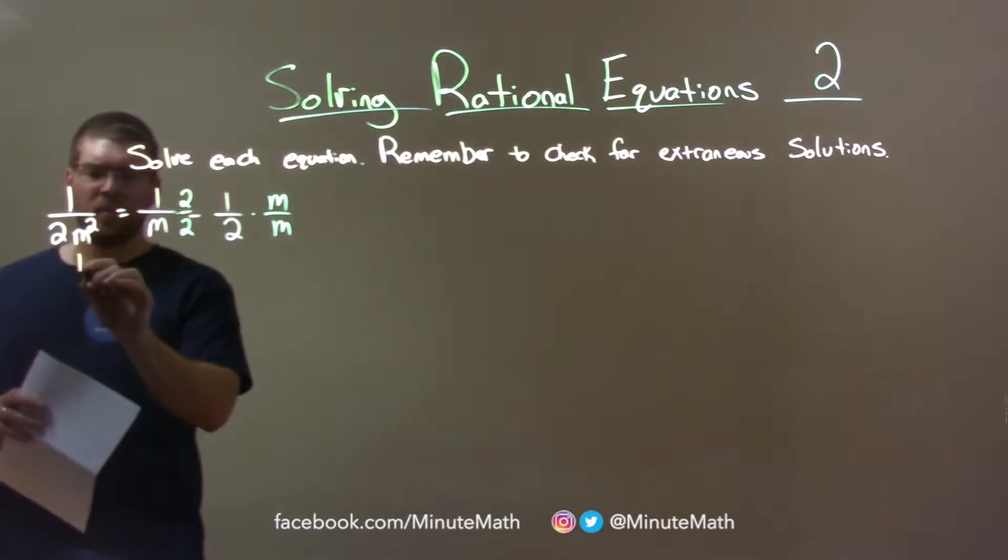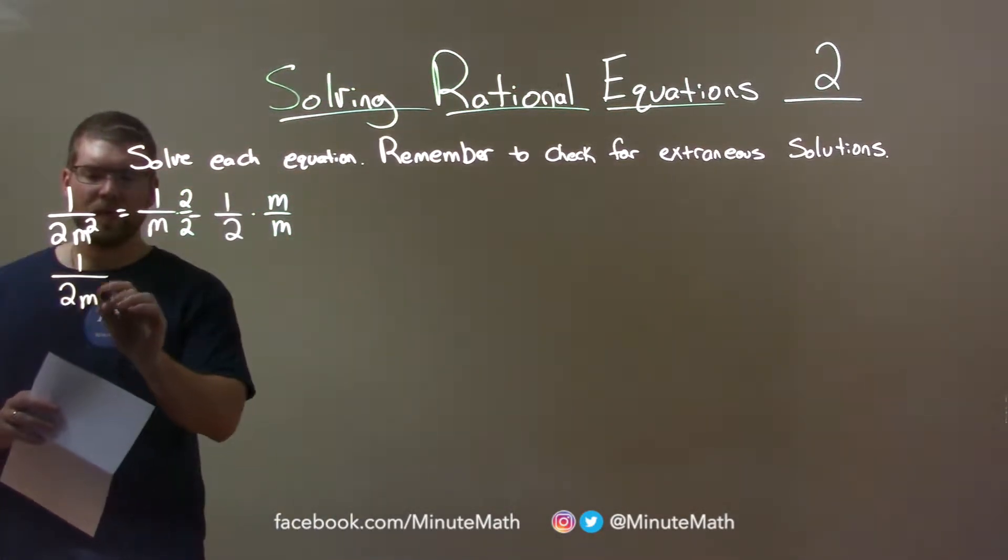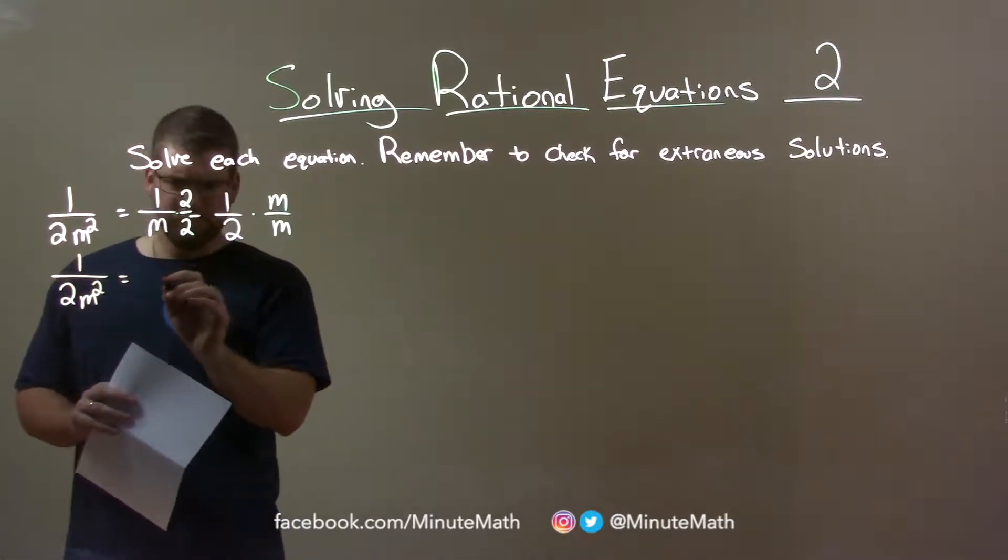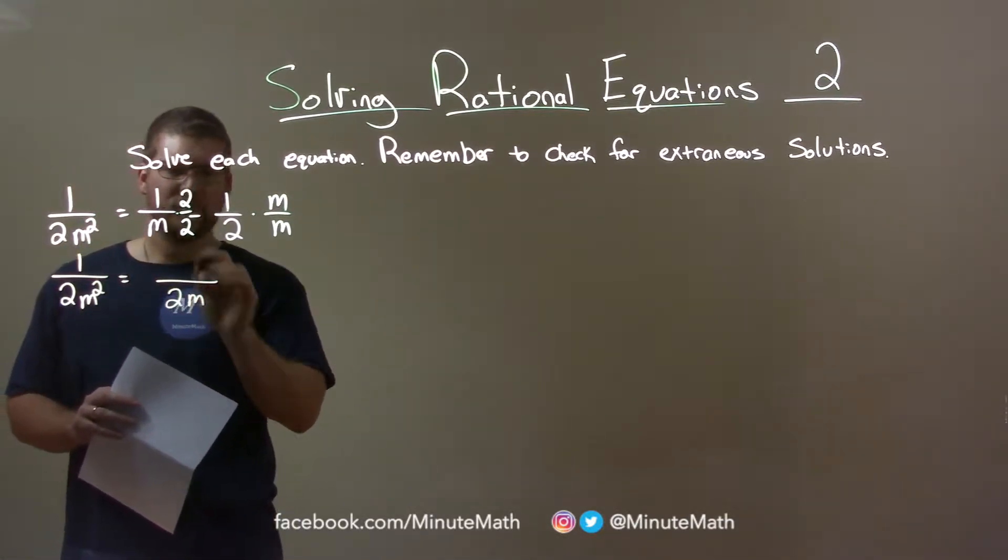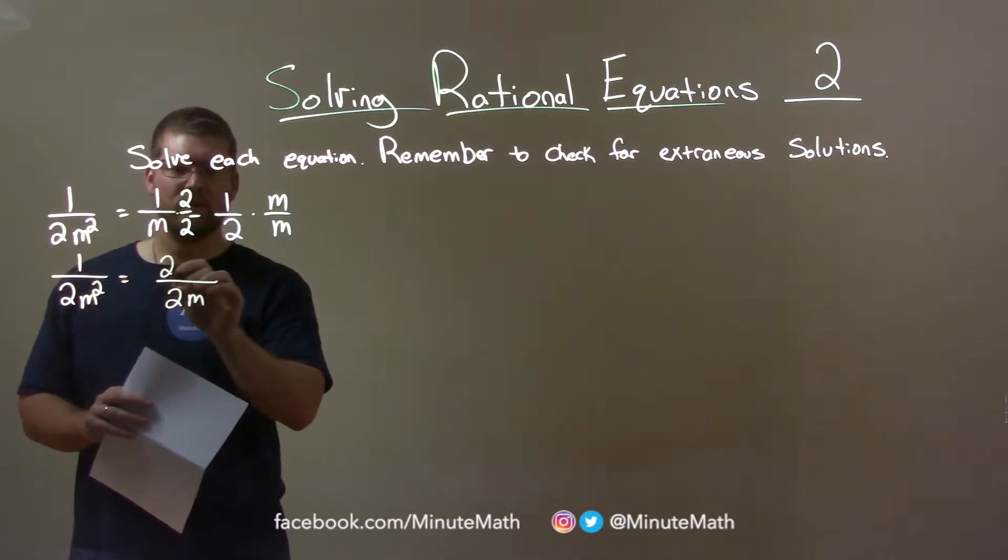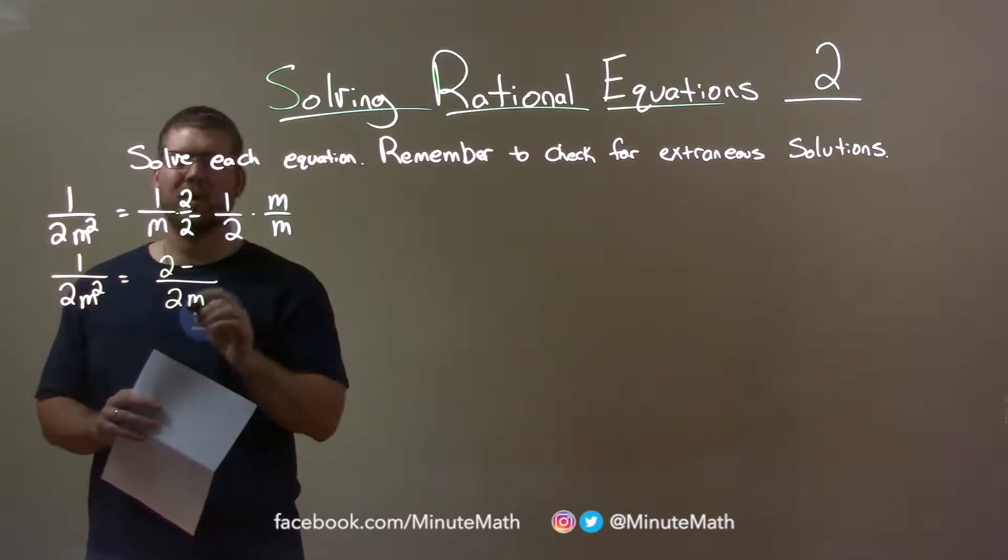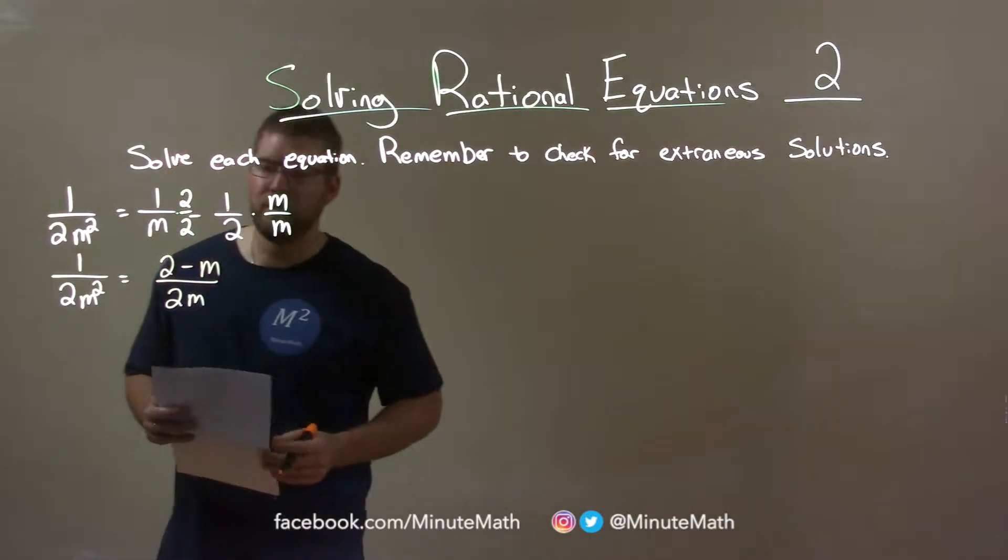Let's bring this down. 1 over 2m squared equals, well, we have a base of just 2m. So the numerator 1 times 2 is 2 minus m times 1 is m. Much simpler now.